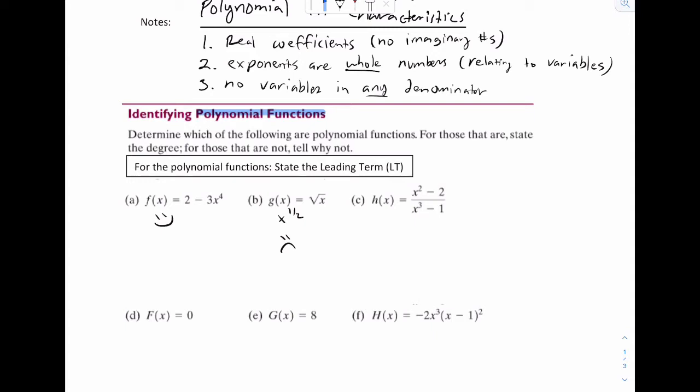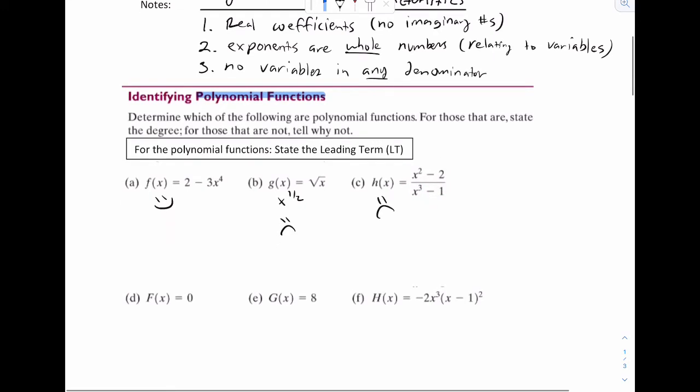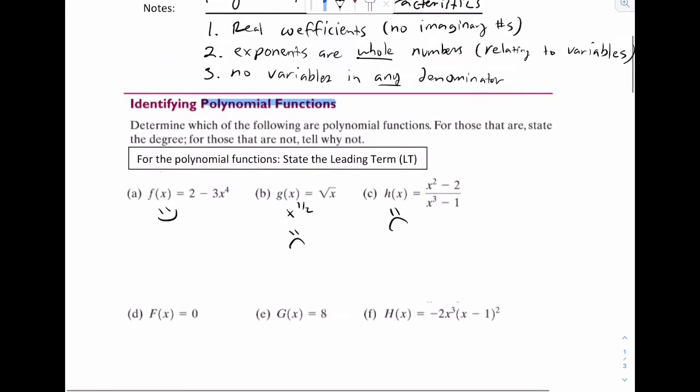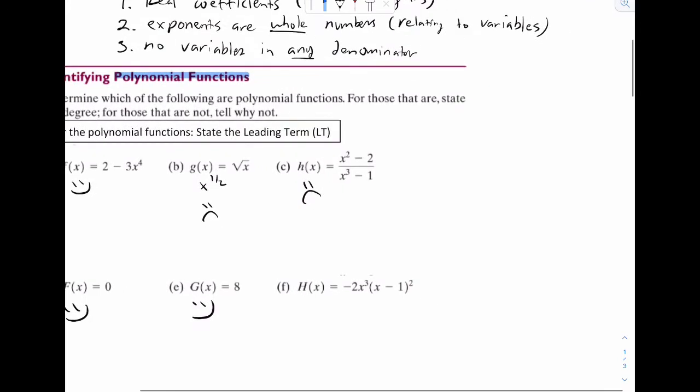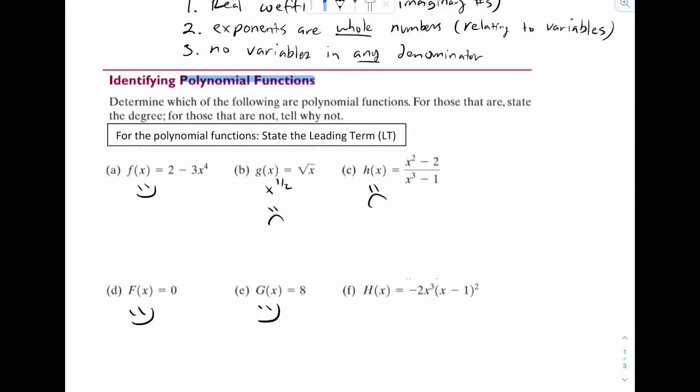For c, that's crazy. That is definitely breaking rule number three of a variable in your denominator. So we're going to put sad face. D is kind of interesting because it's number zero, but notice how that actually does fit every single rule we have up there. So that would be considered a polynomial function. For the same logic, eight is okay. And then f, f looks pretty crazy, but it does follow all the rules. So we're going to put happy face.